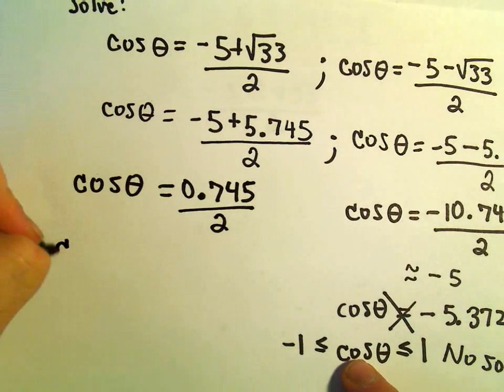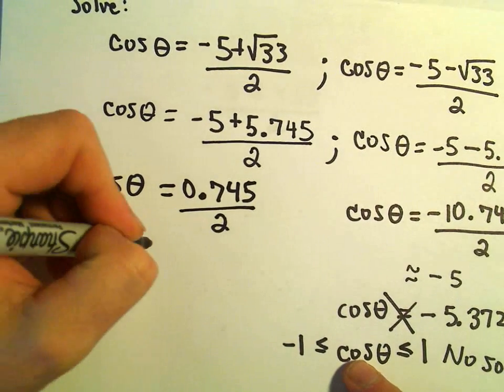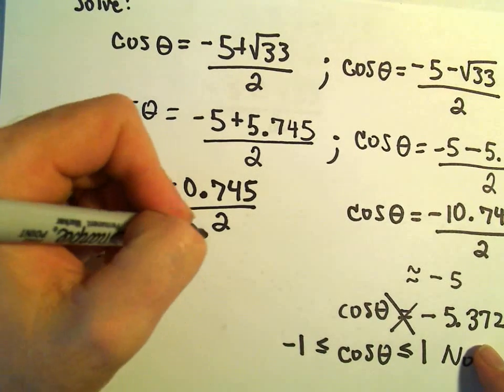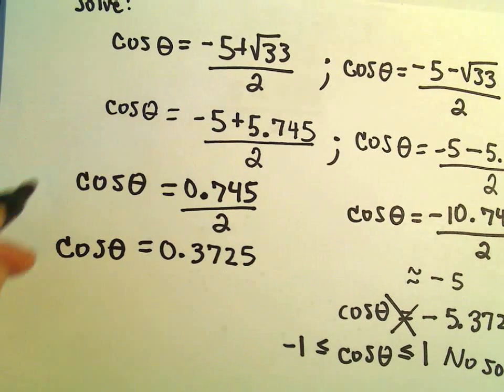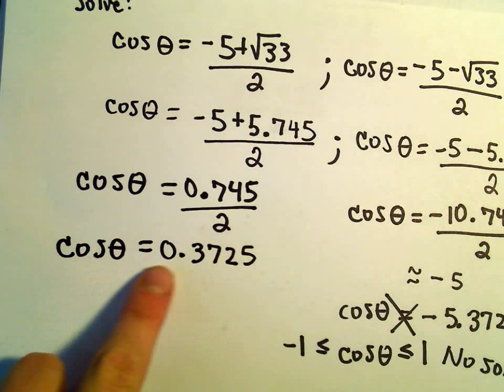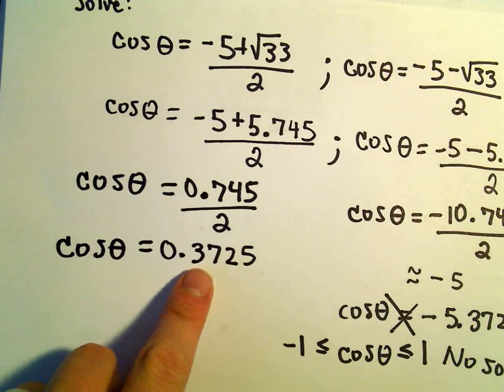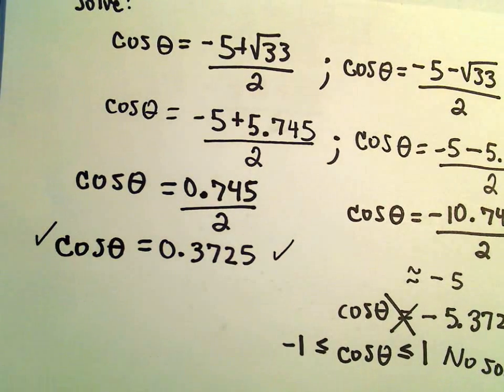If we simplify this, we'll get 0.745 over 2 was 0.3725. And this is within the range of cosine. This is a number between positive 1 and negative 1. So this equation does, in fact, have solutions.